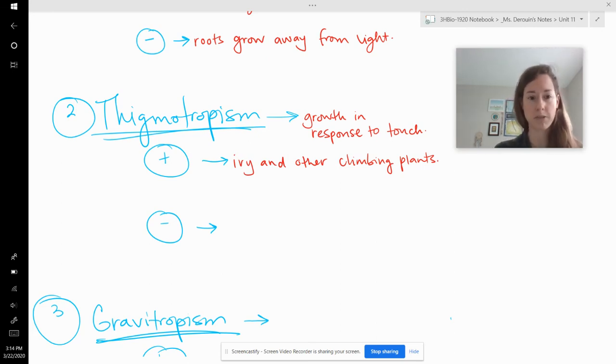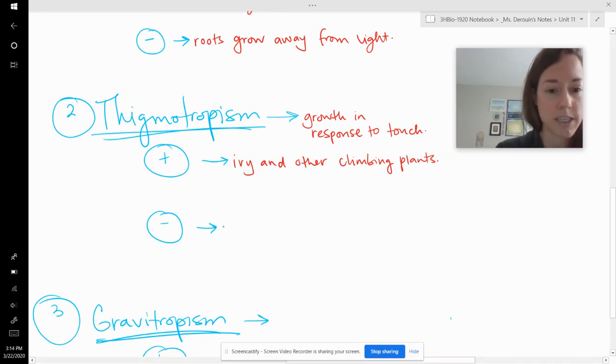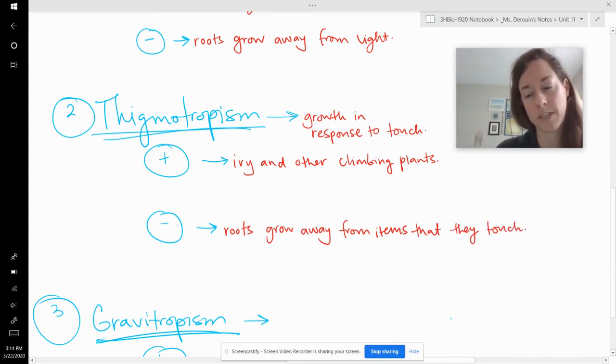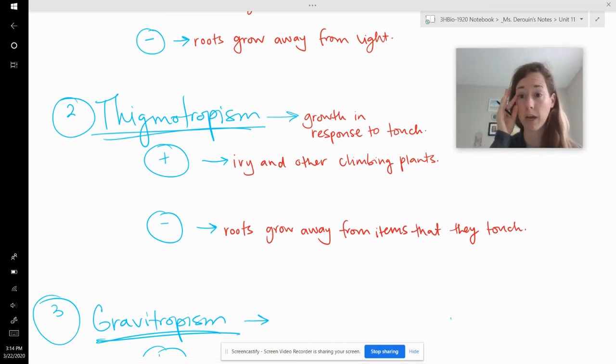And then negative thigmotropism is again with roots. So this is growth. I'll say roots grow away from items that they touch. So for example, if a tree has roots, it runs into a pipe, the roots will start to grow away from the object that it's touching. If it has space. So it doesn't always have space, but if it does, the roots will try to grow in the opposite direction.